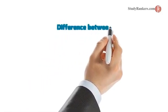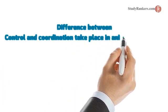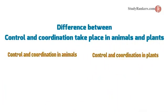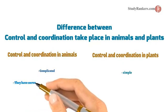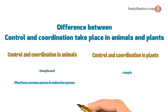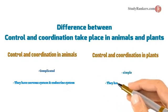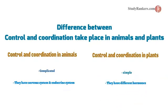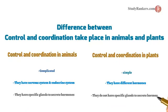Lastly, we will understand the differences between control and coordination in animals and plants. Control and coordination in animals is complicated, while in plants it is simple. Animals have a nervous system and endocrine system, but plants have different hormones responsible for control and coordination. Animals have specific glands to secrete hormones, but plants do not have specific glands to secrete hormones.